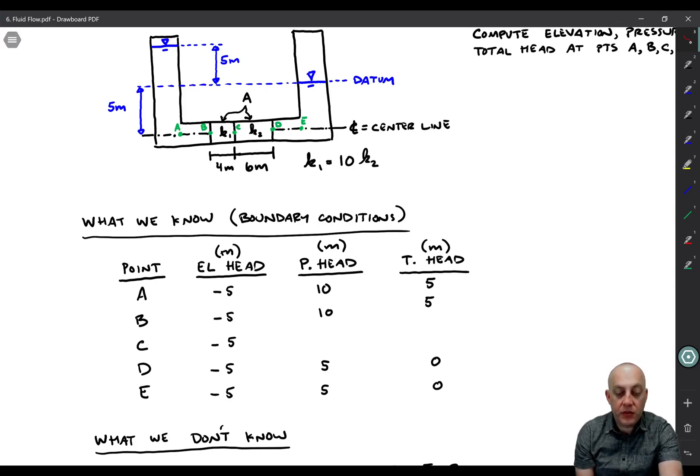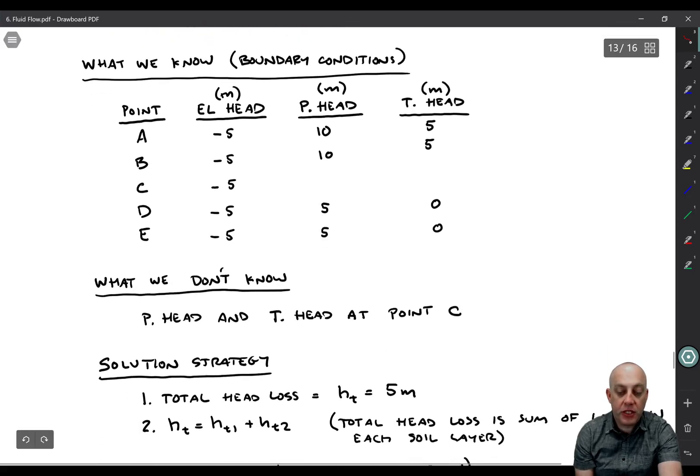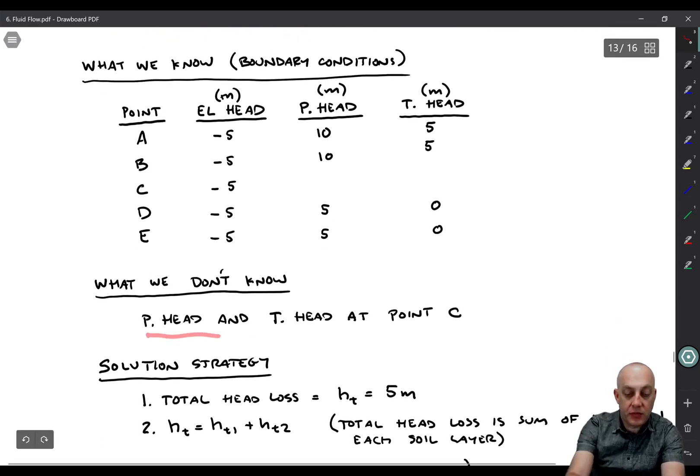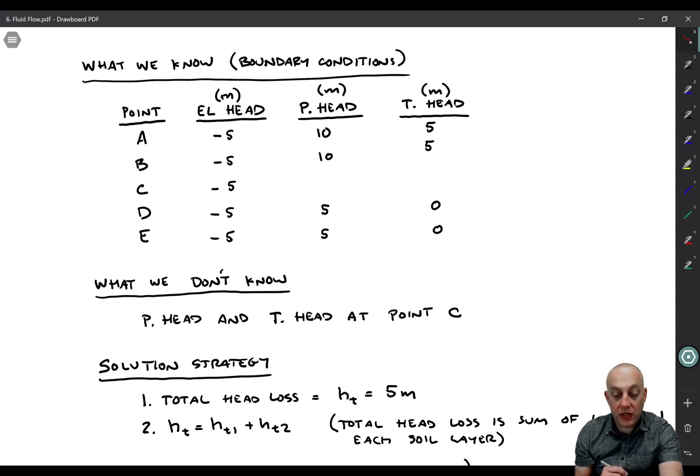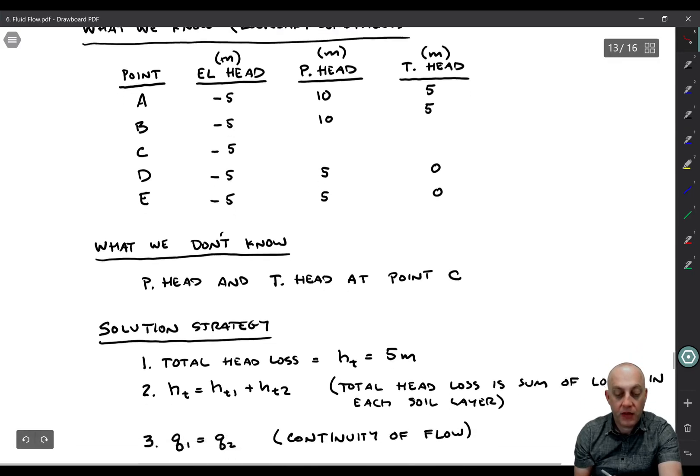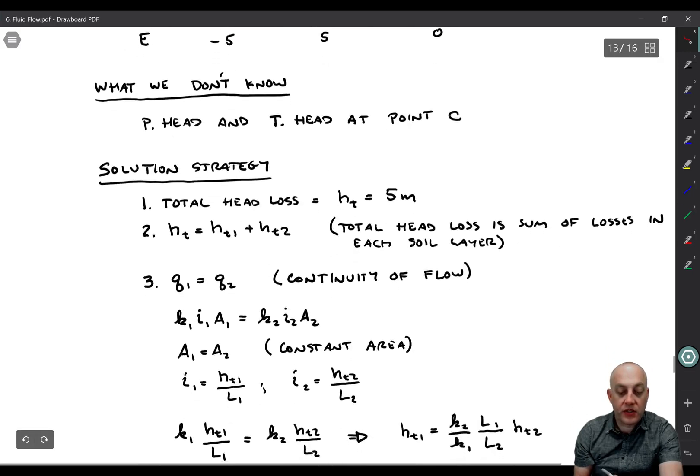Therefore we can't directly use the water surface to compute pressure head. So what we're going to need to do is find the total head at point C first and then back calculate the pressure head from it. Now, knowing what you know and knowing what you don't know is actually the hardest part of these problems.